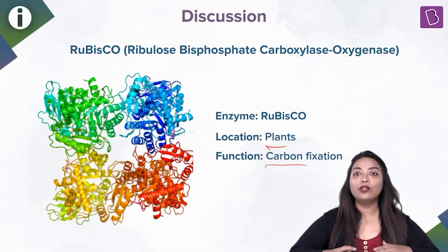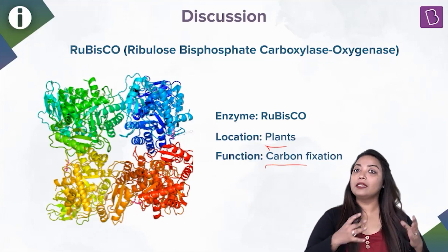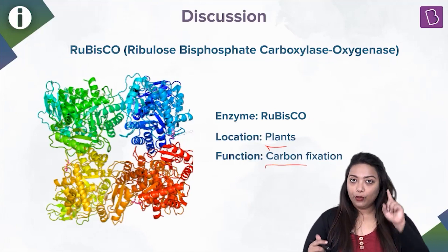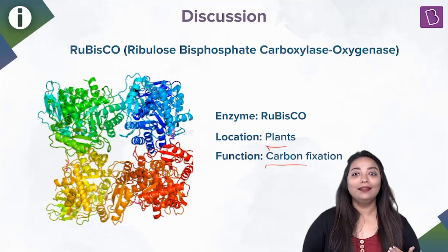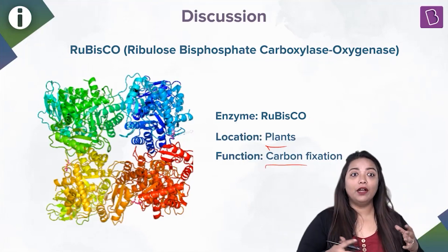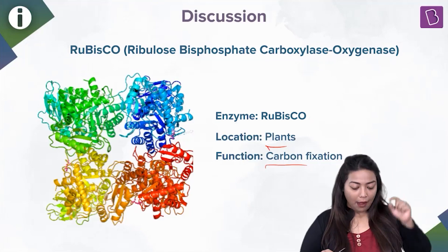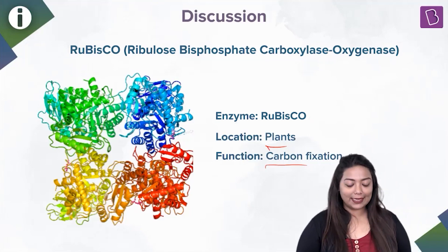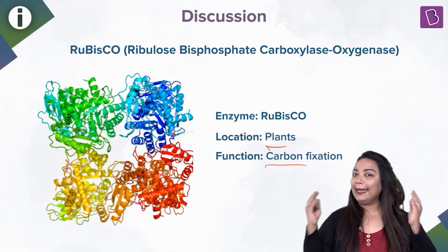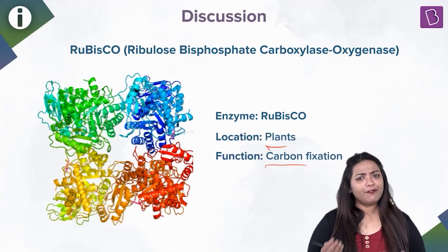RuBisCO is found in plants and its primary function is carbon fixation. When you talk about photosynthesis — the process where the plant is making its own food — it needs carbon dioxide. This carbon dioxide from the atmosphere is fixed into the plants by RuBisCO. And if you observe its structure, it's highly complex.